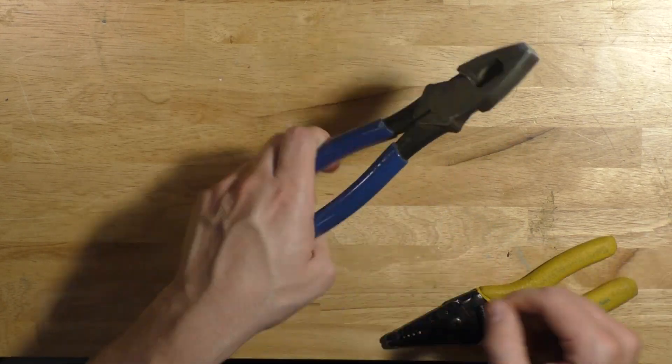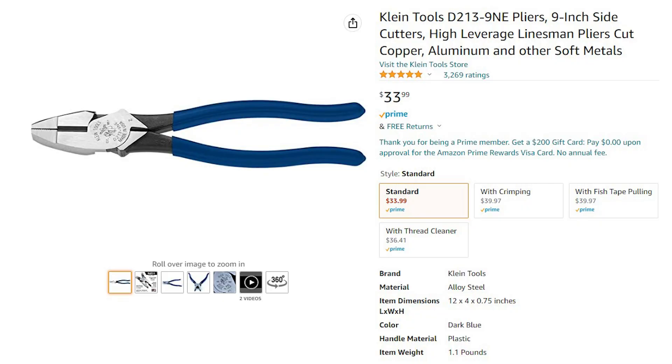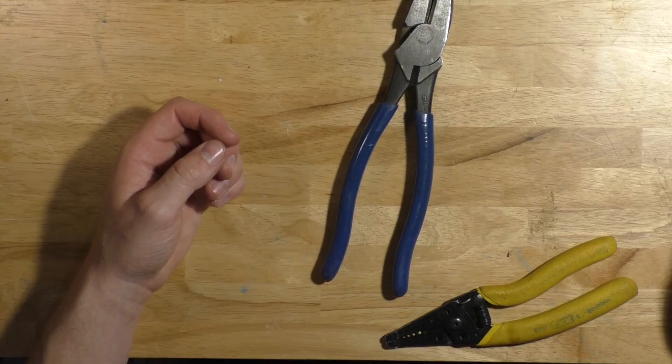They are long so that way they have good leverage to twist and pull wire all day long. I'm suggesting the Klein lineman pliers with the plain Jane grips which will cost around $35.